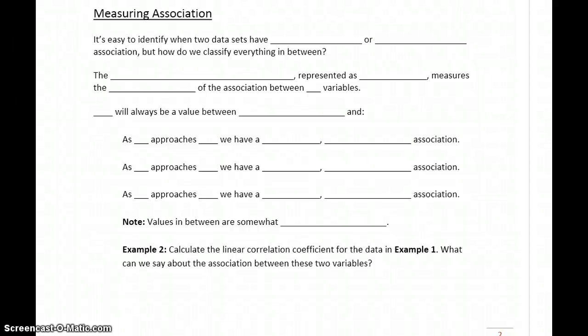So in the last example, we constructed a scatter plot. We discussed its trend, shape, and strength. What you can start to notice as you look at some more scatter plots is that it can be easy to identify when two data sets or two variables have a very strong or very weak association.